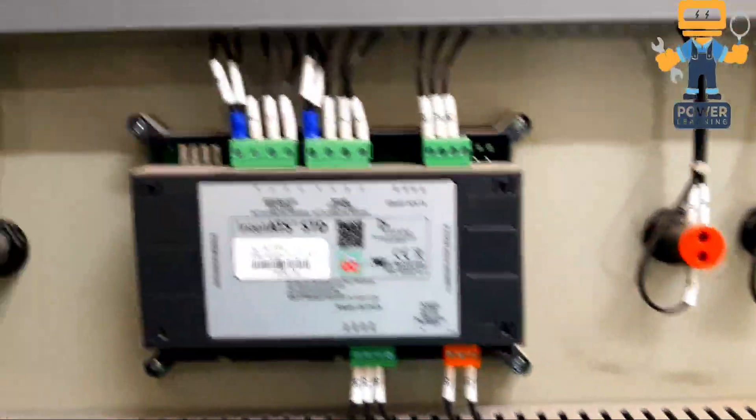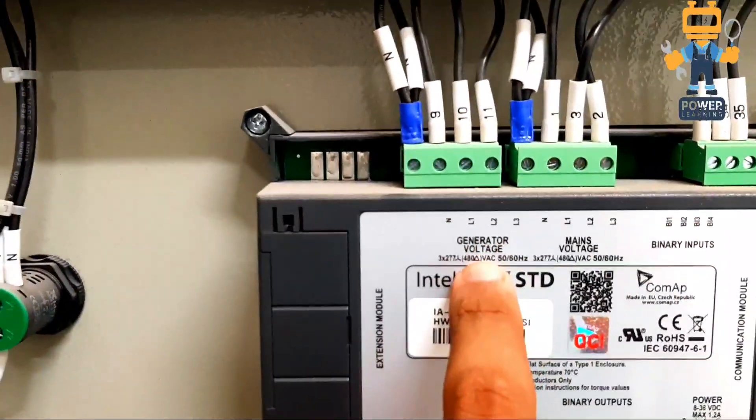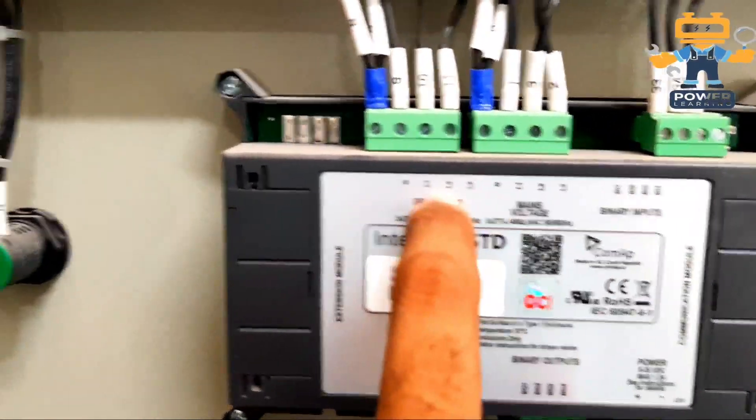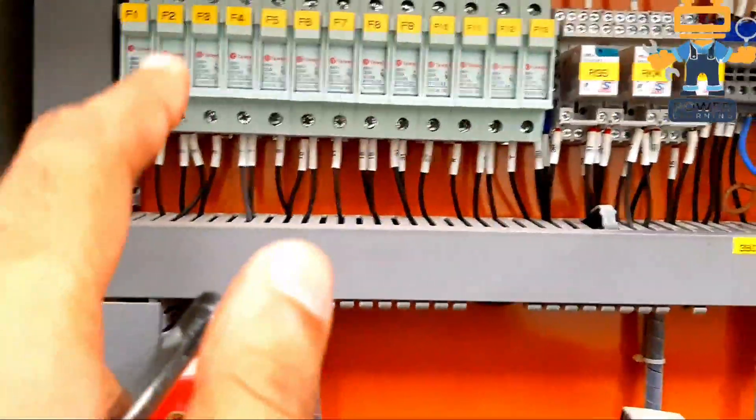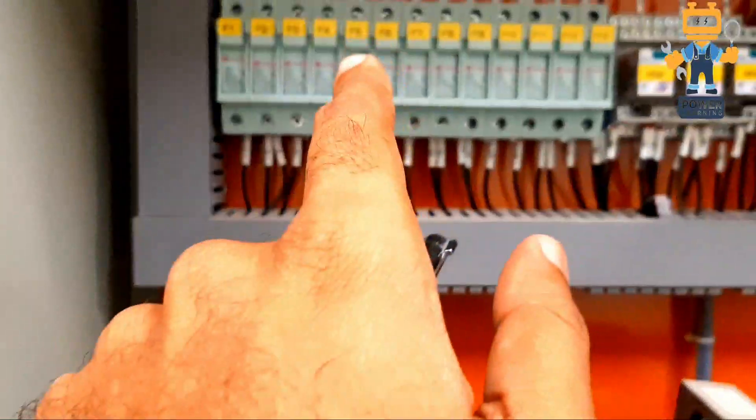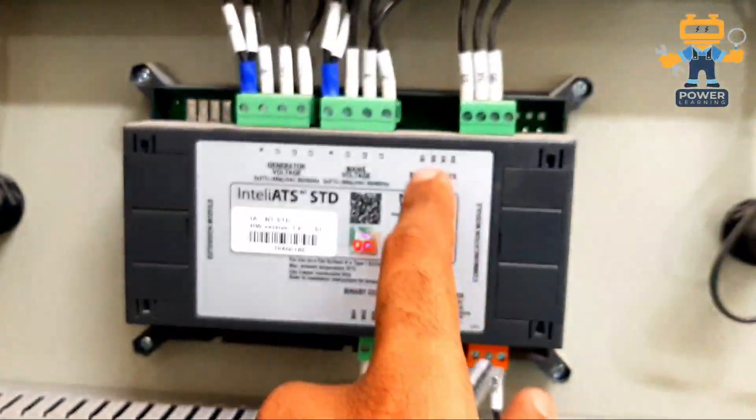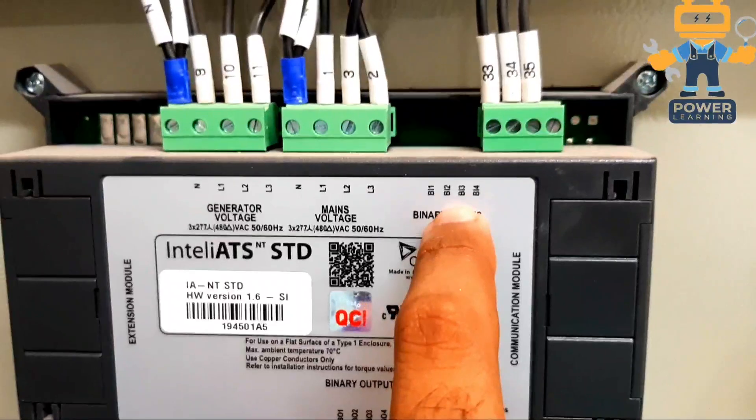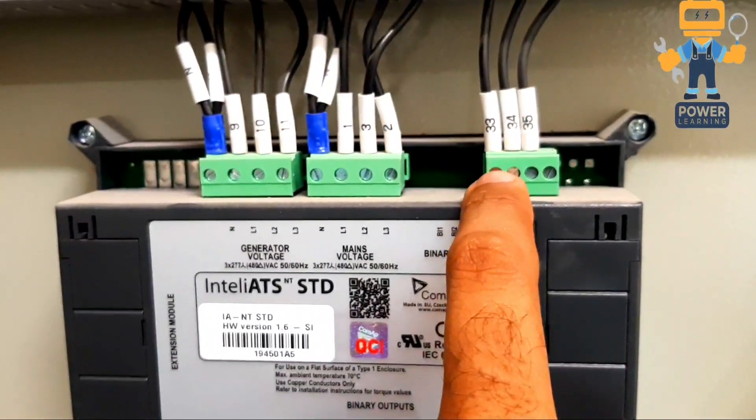First we have generator voltage: neutral, line one, line two, line three, which is coming from these three fuses. After that, mains voltage, which is also coming from these three fuses. These are the binary inputs, digital inputs for signaling. Once the breaker is closed, it will show us breaker is closed. These two are for breaker close and the third binary input is for remote signal on and off.